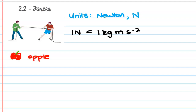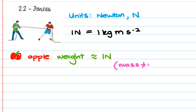So if we had an apple and we wanted to talk about the weight of that apple — because weight is a force — an apple's weight is approximately equal to one newton. It's really good to know. Remember, mass does not equal weight; they're two separate concepts which we'll talk about soon. So we could draw a force acting downwards of one newton acting on that apple.